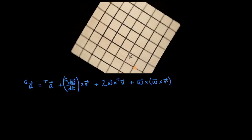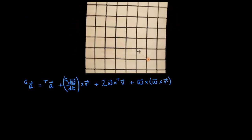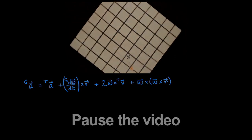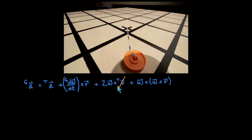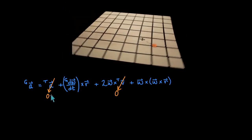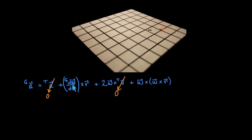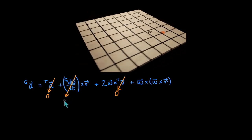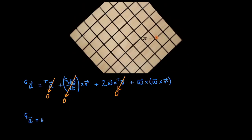Given this information, pause the video and determine the acceleration of the orange disc in the G frame. The velocity and acceleration of the disc are zero in the T frame of reference. We did our best to rotate the turntable with a constant angular velocity, so we will assume that the angular acceleration is negligible. Thus, the acceleration in the G frame is given completely by the centripetal acceleration term. This vector points in the negative r direction, with the magnitude given by the distance from the axis multiplied by the angular velocity squared.